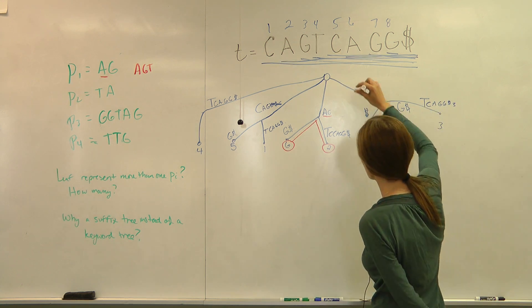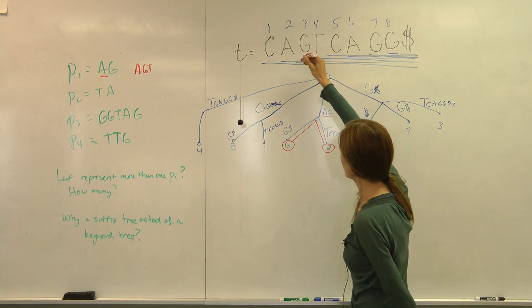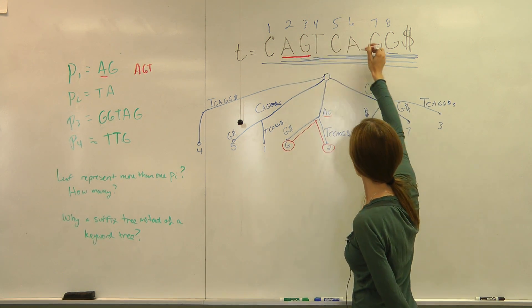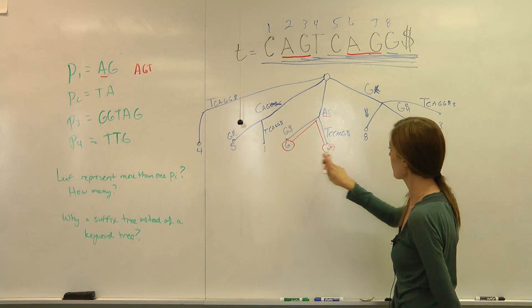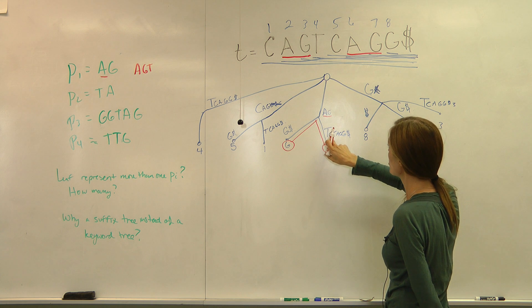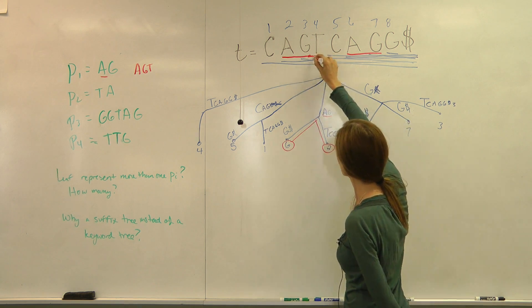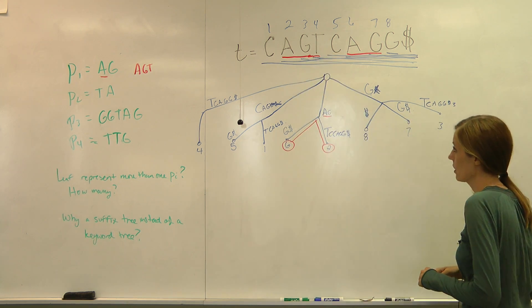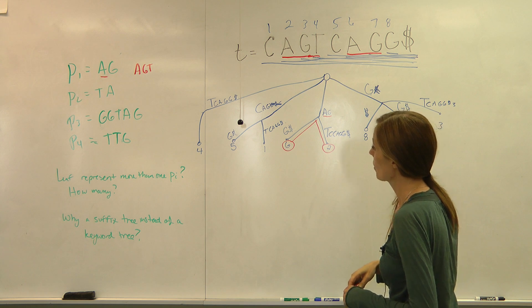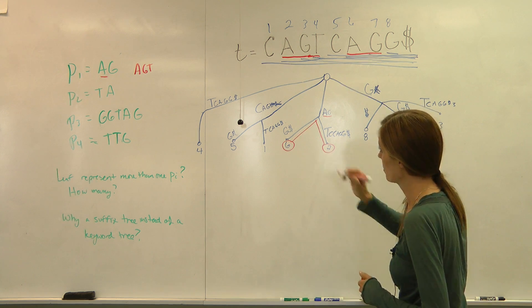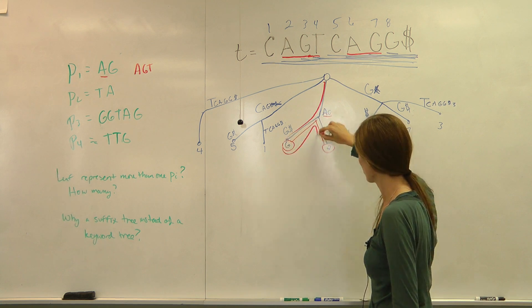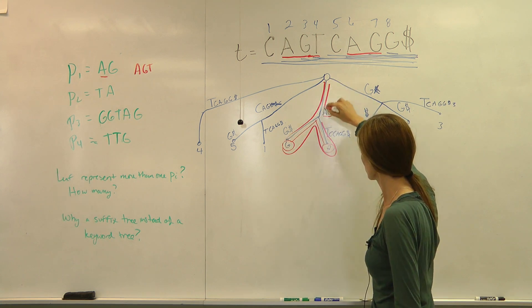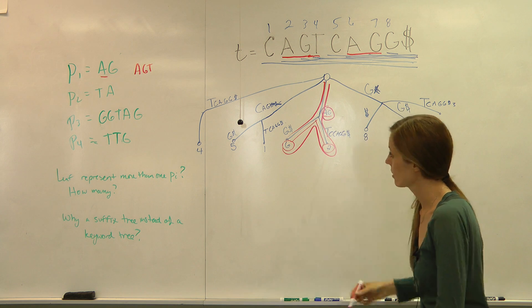And up here, that makes sense. AG occurs here and it occurs here. It occurs at two and occurs at six. And we have those represented here. AGT only exists at two. So your pattern for AG does exist on these branches. And here is your pattern as it's shown.